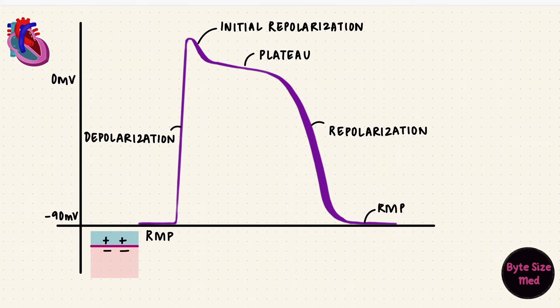The depolarization is from the opening of sodium channels. Sodium enters the cell, making the inside less negative and more positive. So the upstroke, up to around positive 20 mV. There's also a contribution from calcium through the calcium channels towards the end of the upstroke.